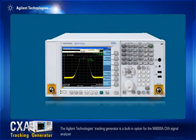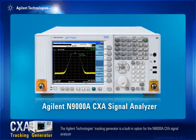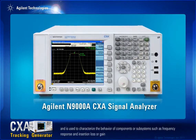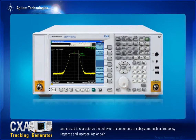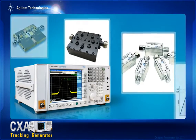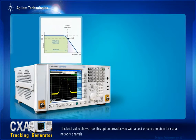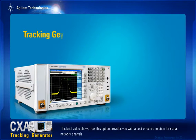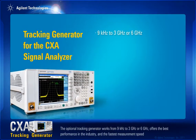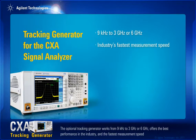The Agilent Technologies Tracking Generator is a built-in option for the N9000C XA Signal Analyzer and is used to characterize the behavior of components or subsystems, such as frequency response and insertion loss or gain. This brief video shows how this option provides a cost-effective solution for scalar network analysis. The optional tracking generator works from 9 kHz to 3 GHz or 6 GHz, and offers the best performance in the industry and the fastest measurement speed.